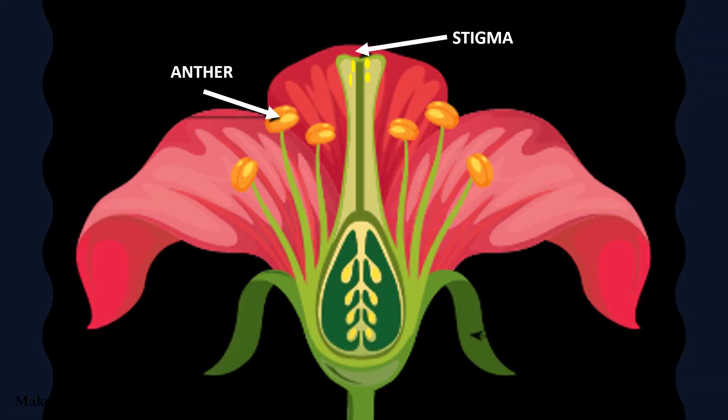The pollen then moves down to the style, and reaches the ovary. Here the seeds are formed.